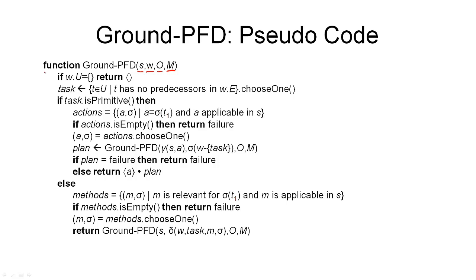We look at the first task in the network. The first case is that there is no such task in the network. If there is a task, it can be either primitive or non-primitive. Since this task network is partial order, there may be multiple tasks that are first — meaning having no predecessors in the network. We have to choose one from the set of all such tasks with no predecessors and make that the task we want to refine next.